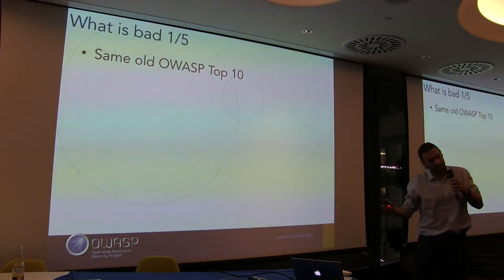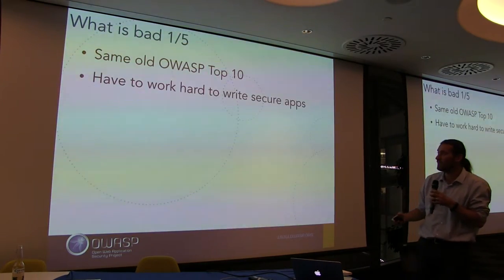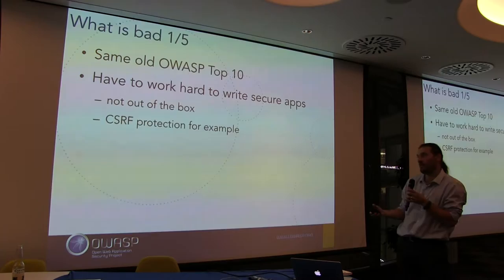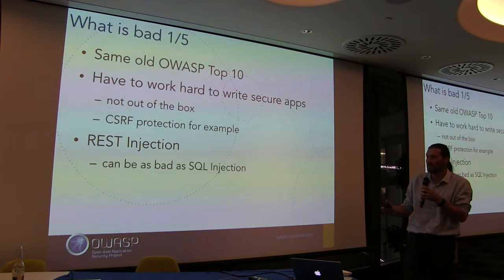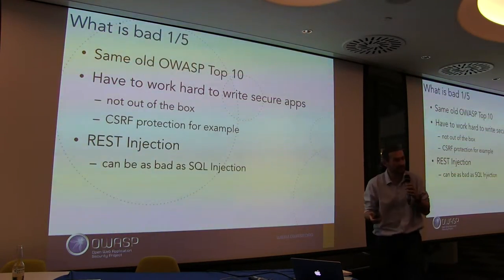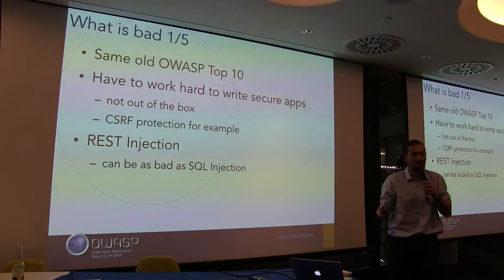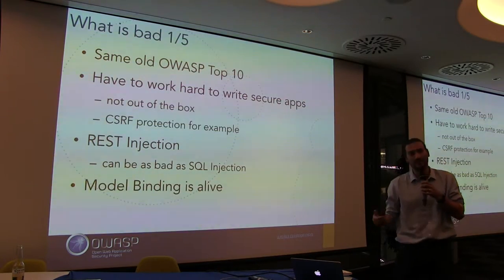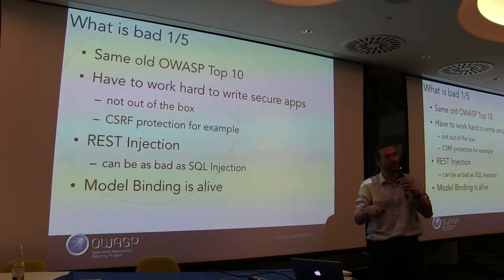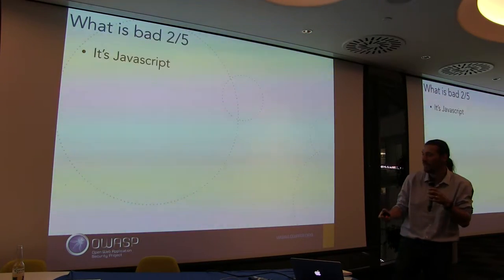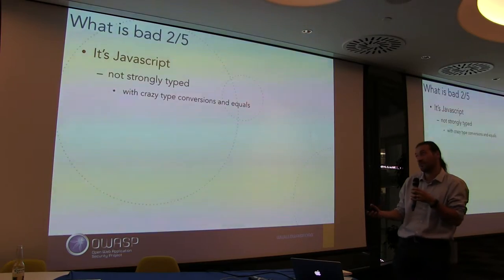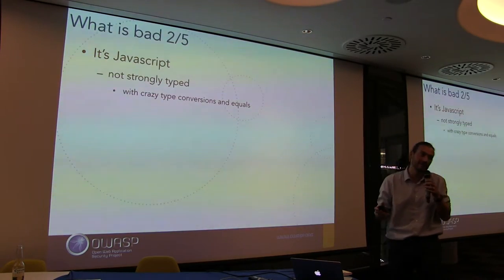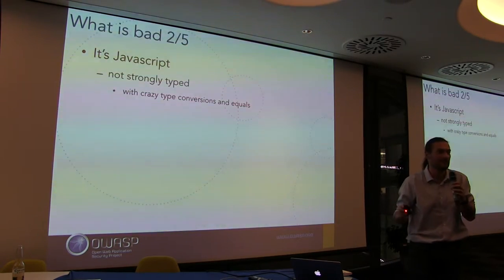So what's bad about JavaScript? We still have the same old top-10. We have to work hard for a secure app — nothing is secure out of the box. REST injection can be as bad as SQL injection because everything is at a proxy. Mass assignment is still nice and alive because people sometimes take the whole body and bind it directly to objects. And it's freaking JavaScript — which has some crazy type conversions.